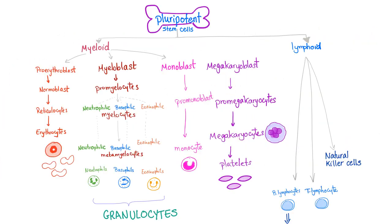We start with a pluripotent stem cell, then we have the myeloid, megakaryoblast, megakaryocyte, and then platelets. What stimulates platelet production is the famous TPO, thrombopoietin.